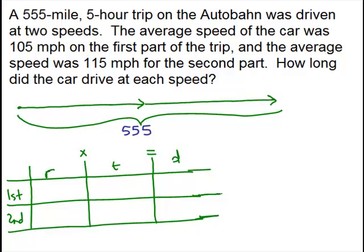Okay. All right. So on the first part of the trip, what's it tell us? The average speed was 105. The second part of the trip, it was 115. All right, sped up.